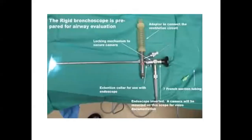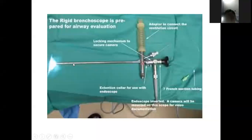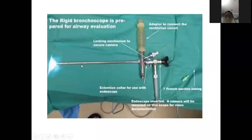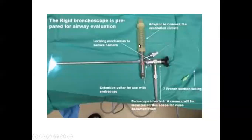This is a bronchoscope — a tube which goes into the larynx, into the trachea, and into the bronchus. This is the light which emits from the end, and this is the eyepiece. This is the light source, and this port is for the general anaesthesia tube, which is attached so that air can go in. This is the whole bronchoscope.